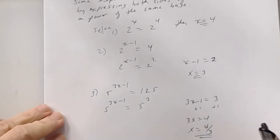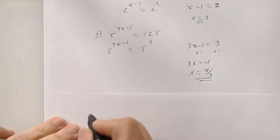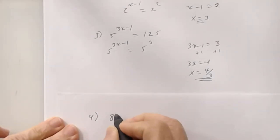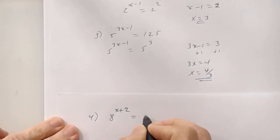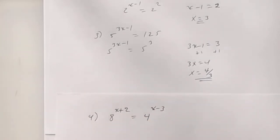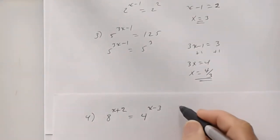Number 4: 8 to the x plus 2 equals 4 to the x minus 3. Let's come back to that one. Let's do number 5 first.